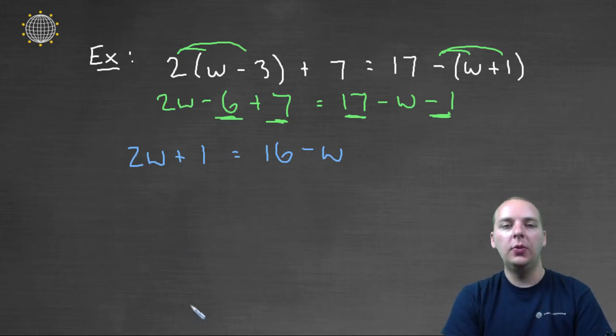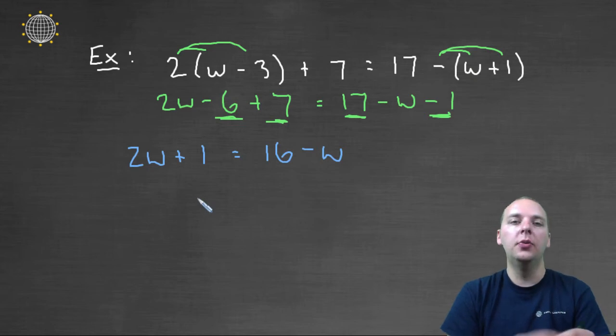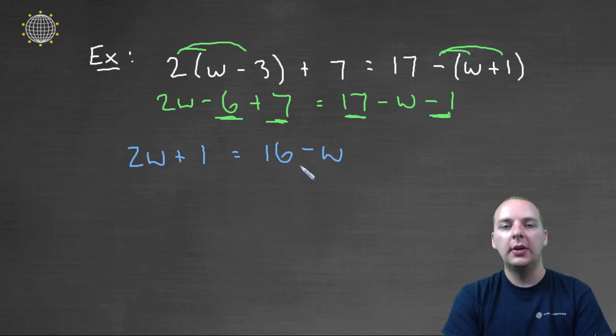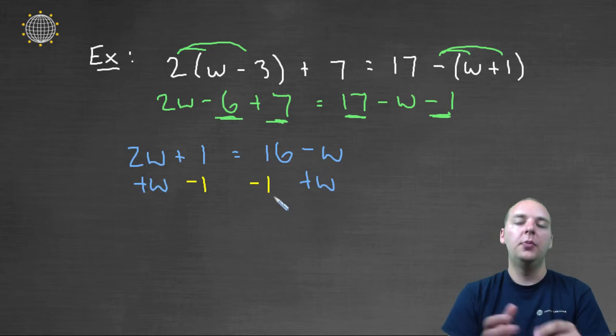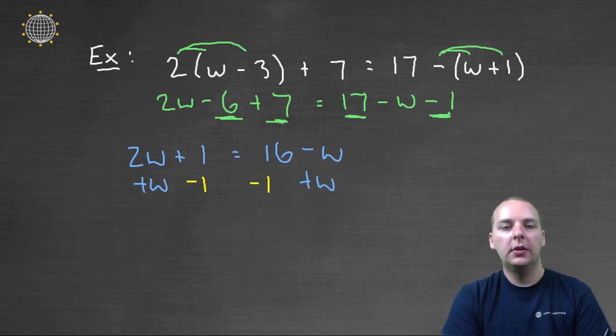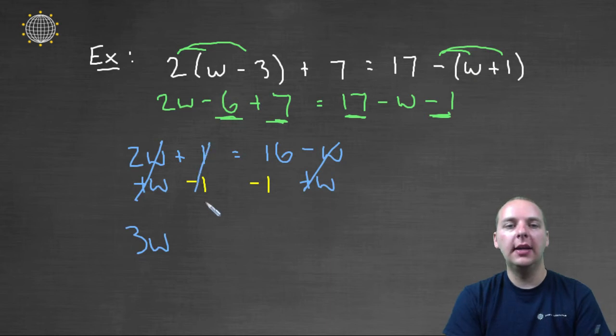Now we have to add or subtract to move the constants to one side and the variables on the opposite side. So I think it'd probably be best if we added w to both sides. And if you can handle this at the same time, let's also subtract 1 from both sides. That'll move the variables to the left and it'll move the constants to the right. So we'll have 2w + w makes 3w. And these are gone. And then 1 and -1 cancel, they negate each other. And 16 - 1 makes 15.